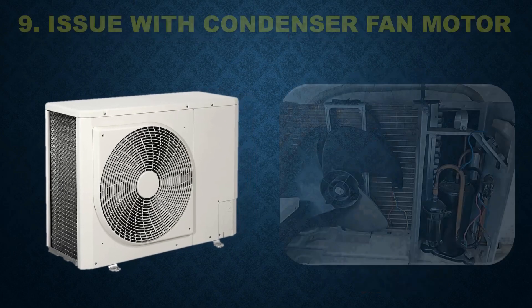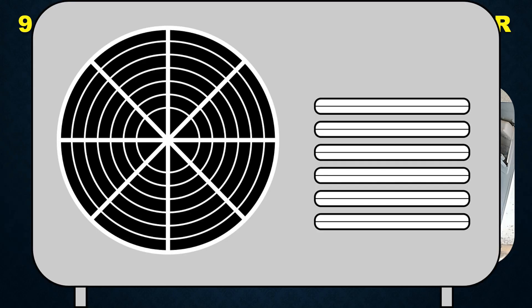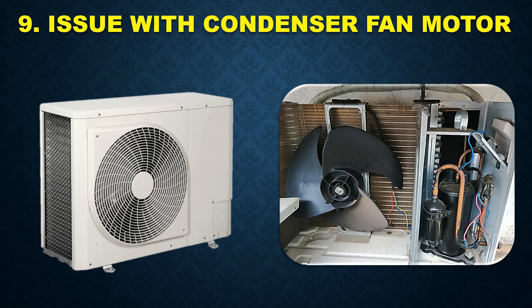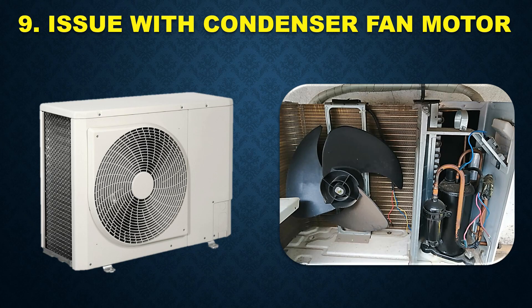Problem number nine is an issue with the condenser fan motor. Generally, the indoor blower fan is working correctly and the outdoor unit compressor is also working, but the condenser fan motor is not running. Due to this, inside the room it may blow chilled air, but the outdoor unit might be overheated and sometimes even fumes are seen. This may be because the AC was not started for about two to three years and due to this the motor is jammed. You can try to rotate the fan blade from the outdoor unit — it may start to rotate with slight force and work properly for the entire season. But if it doesn't, you need a technician to repair this motor. Do not use it in this situation before repair.